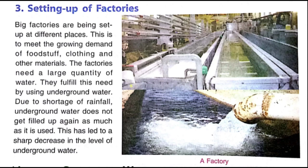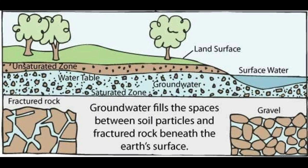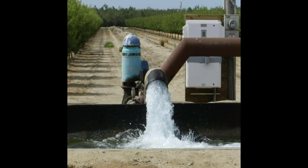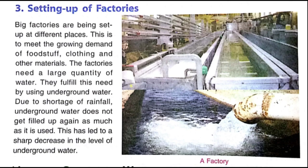Factories need a large quantity of water and they fulfill this need by using underground water. Underground water is one important source of fresh water. Due to the shortage of rainfall, underground water does not get refilled as fast as it is used. This has led to a sharp decrease in the level of underground water.